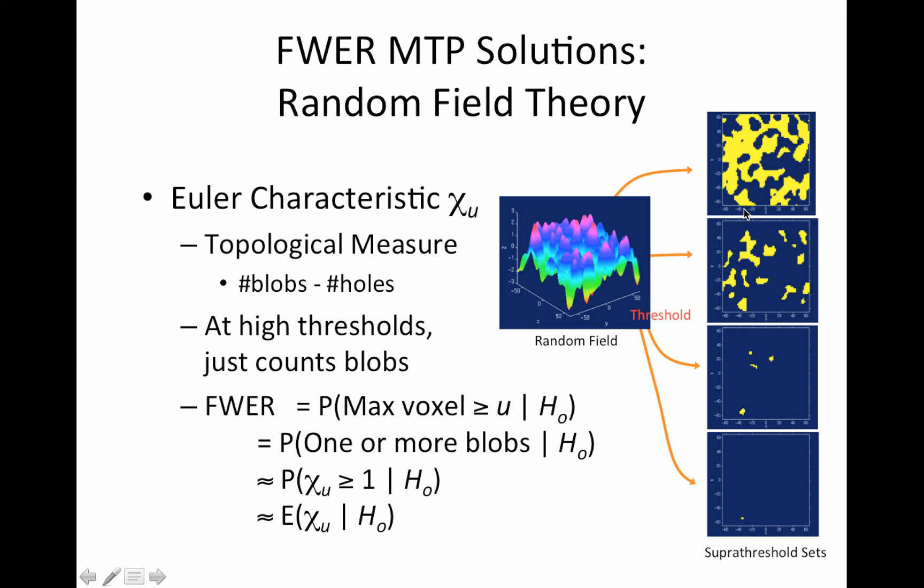The other characteristic that's important with the Euler statistic is holes. So you can see when our threshold's really high, we have mostly one big blob with a bunch of holes in it.